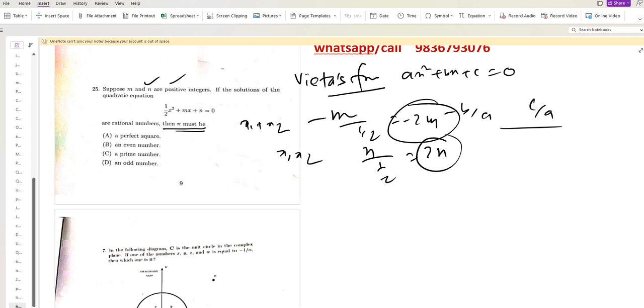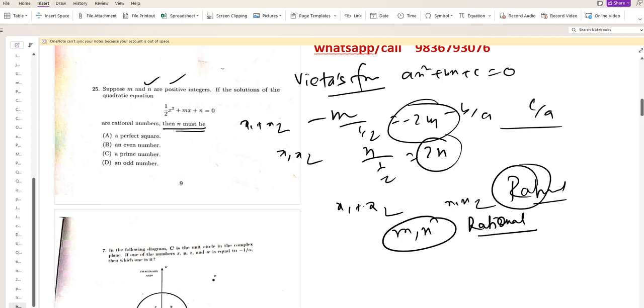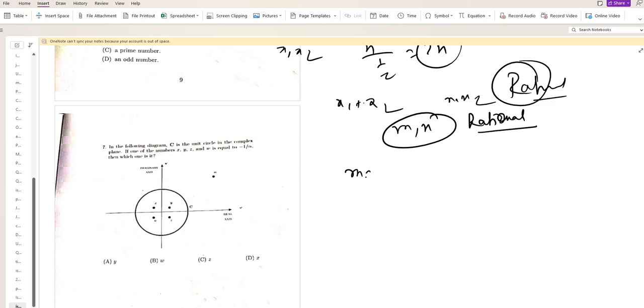Given that the solutions are rational, so x1 plus x2 and x1 times x2 are also rational. For x1 and x2 to be rational, m must be rational and n also be rational. Now since m is rational, let us assume m can be expressed as a ratio of two things, x1 plus x2 equals p by q.